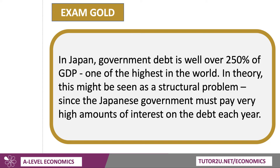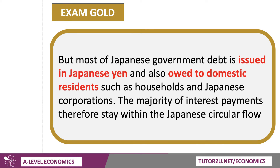We call that the debt service burden. But, worth bearing in mind in terms of evaluation, that most of Japanese government debt is actually issued in their own currency. A lot of African countries, for example, are now issuing debt in euros, which is slightly risky. Japanese government debt is issued in yen. And critically, it's also owed to domestic residents — households, Japanese corporations, Japanese insurance companies, and so on. Therefore, the majority of interest payments from the government stay within the Japanese circular flow.